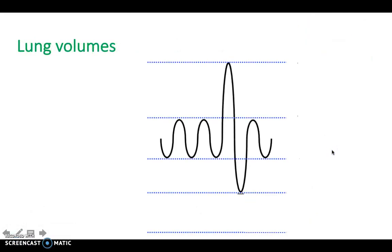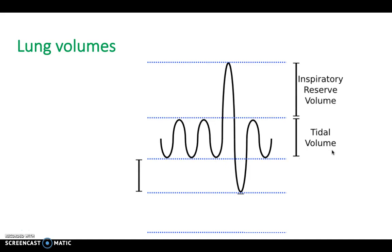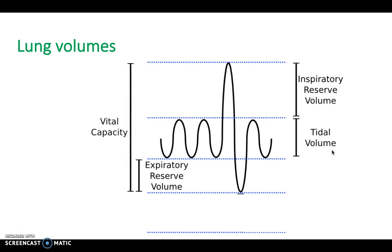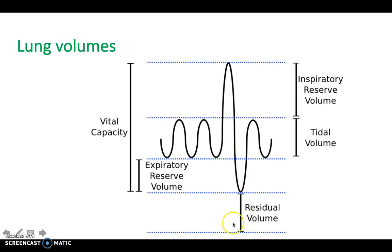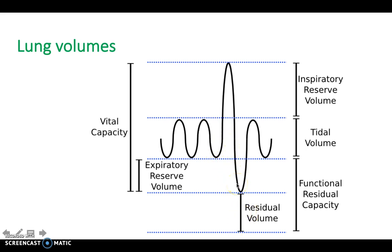Next, lung volumes. Tidal volume is a normal breath in and out — about 500 ml. The inspiratory reserve volume is how much you can additionally inhale forcefully, and the expiratory reserve volume is how much you can additionally exhale forcefully. Together, tidal volume plus IRV plus ERV equals the vital capacity — a common exam question. Below that is the residual volume: air always remaining in the lungs regardless of how much you exhale. The functional residual capacity is what remains after a normal breath out.